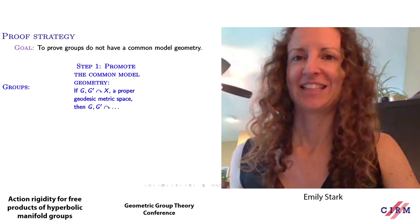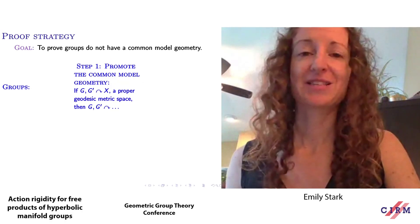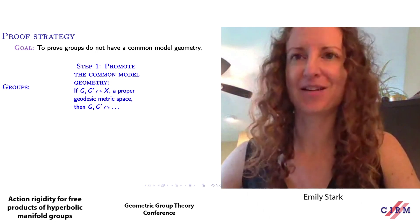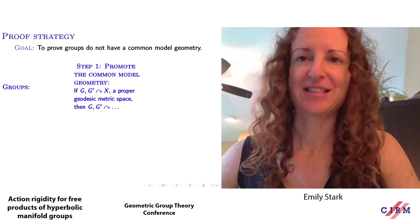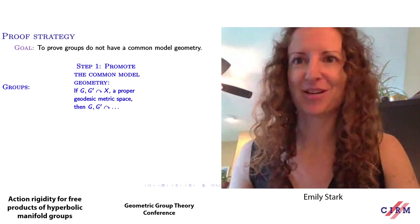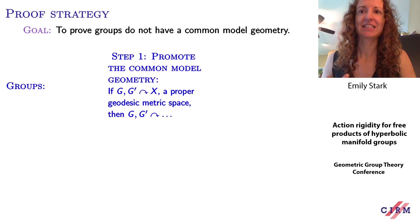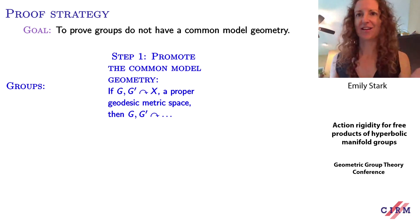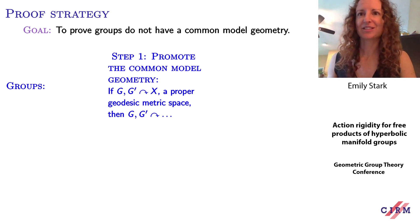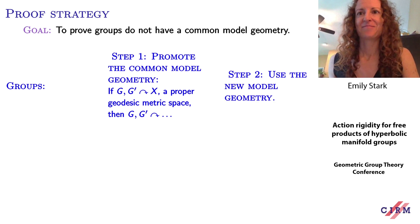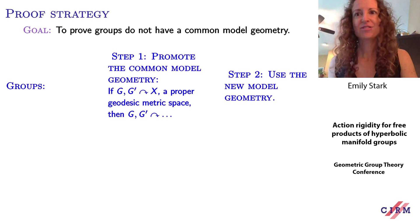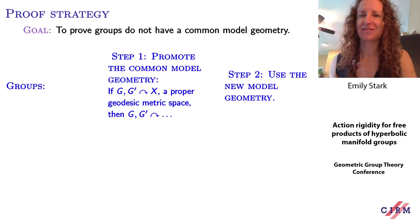The proof strategy in these examples has two steps. The first step in both examples is to promote the common model geometry: suppose two groups in this family act geometrically on X, a proper geodesic metric space, then you want to prove that these groups both act geometrically on some other space that's much nicer with more structure. Step two, which is more special to the class of groups, is to use this model geometry to obtain additional information — like these groups must be isomorphic or commensurable.